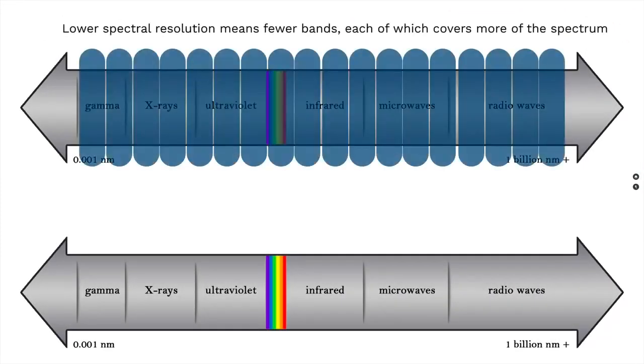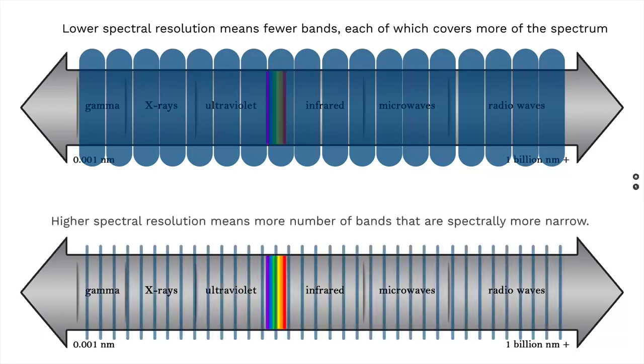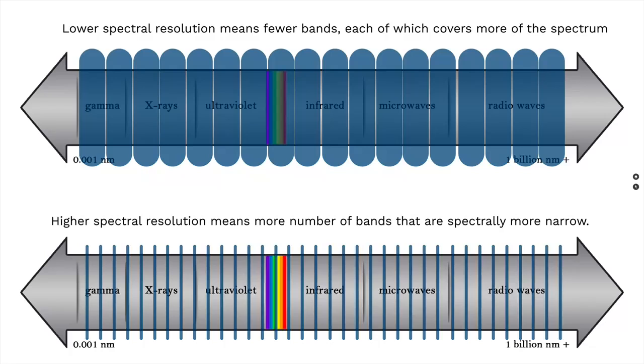Lower spectral resolution means fewer bands, each of which covers more of the spectrum, whereas higher spectral resolution means more bands that are spectrally more narrow.